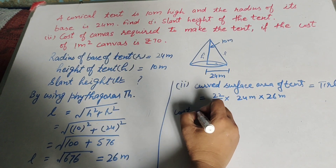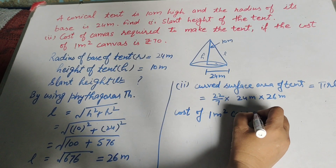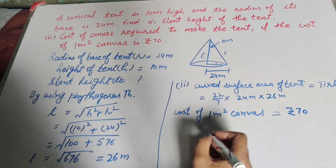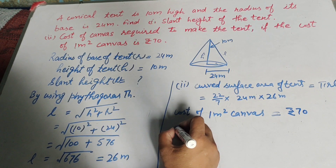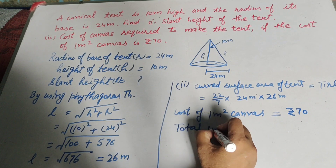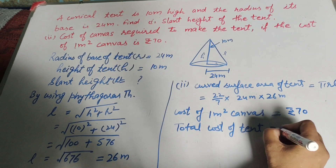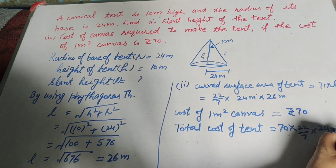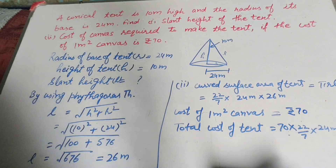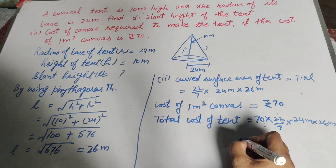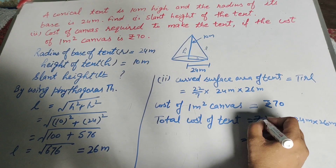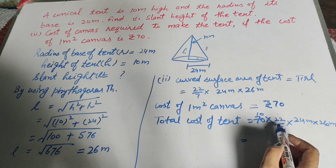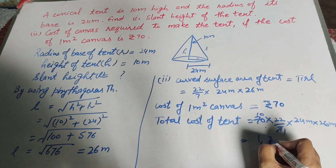The cost of 1 meter square canvas is rupees 70. The total cost of the tent is equal to 70 multiplied by the curved surface area, which is 22 over 7, multiplied by 24, multiplied by 26 meter square. Since 70 and 7 are both multiples of 7, we cancel them. Now the tent cost equals 10 multiplied by 22, multiplied by 24, multiplied by 26.